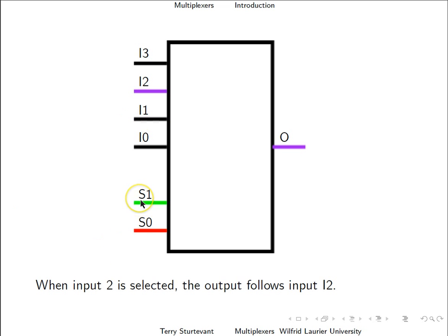When input 2 is selected, indicated by 1,0, the output follows input I2. And when input 3 is selected, indicated by 1,1, the output follows input I3.